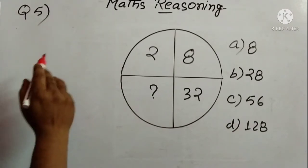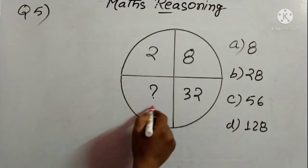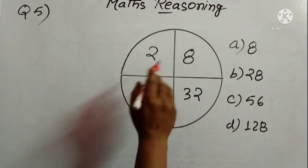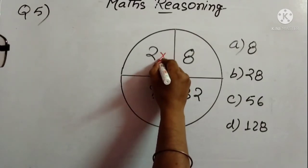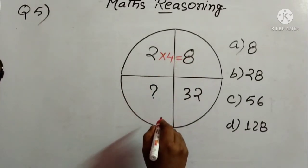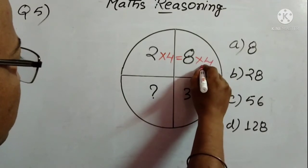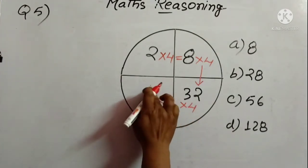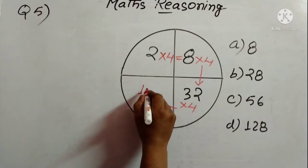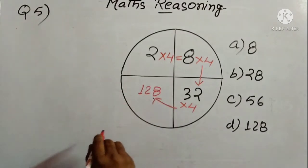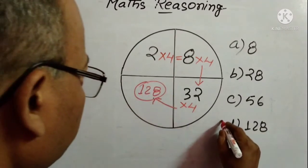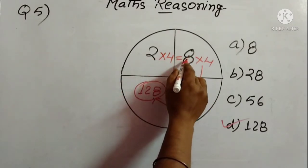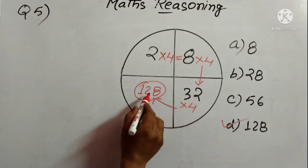The last question for today, the fifth one: we need to find out the suitable number from the 4 options. 2, 8, 32 is given. See: 2 × 4 = 8, again 8 × 4 = 32. So 32 × 4 should give you the result: 32 × 4 = 128. This is the simplest method — just multiply by 4 each time: 2 × 4 = 8, 8 × 4 = 32, 32 × 4 = 128.